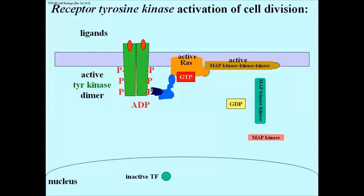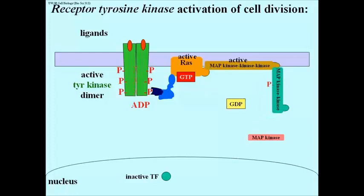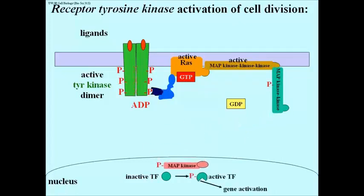Let's look at the rest of this cascade. MAP kinase kinase kinase phosphorylates MAP kinase kinase, which then phosphorylates MAP kinase, which in turn enters the nucleus and catalyzes the phosphorylation of a transcription factor that activates genes, ultimately leading to cell division.